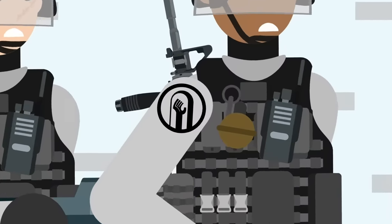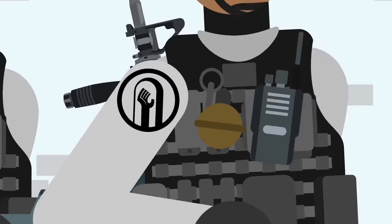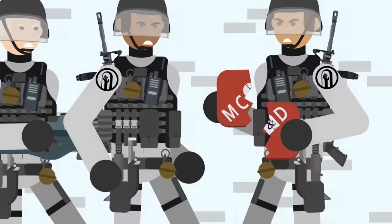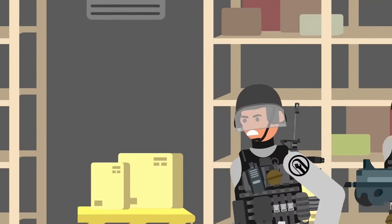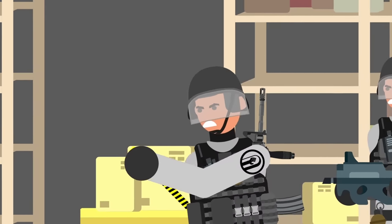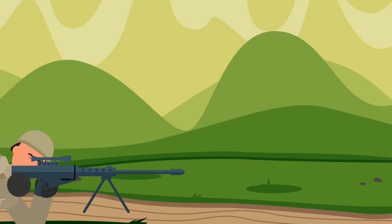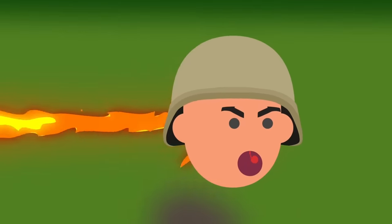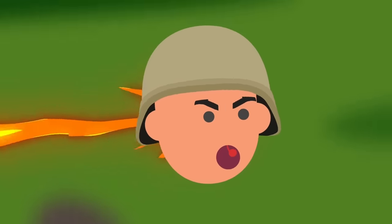MTF Mu-3, aka Highest Bidders, is a mobile task force devoted to preventing the group of interest Marshall, Carter, and Dark Limited from disseminating dangerous anomalous objects, and then obtaining and containing these objects. One such object is SCP-2818, a number of .50 cal sniper rifles that when fired turns the shooter into a bullet and fires them.